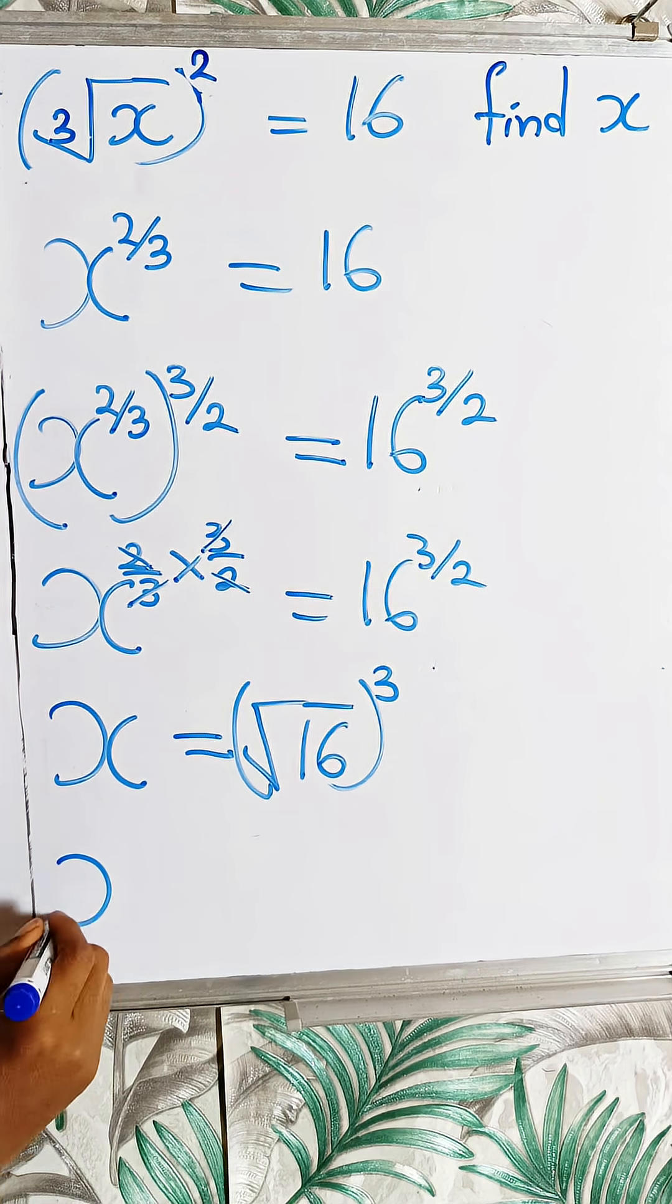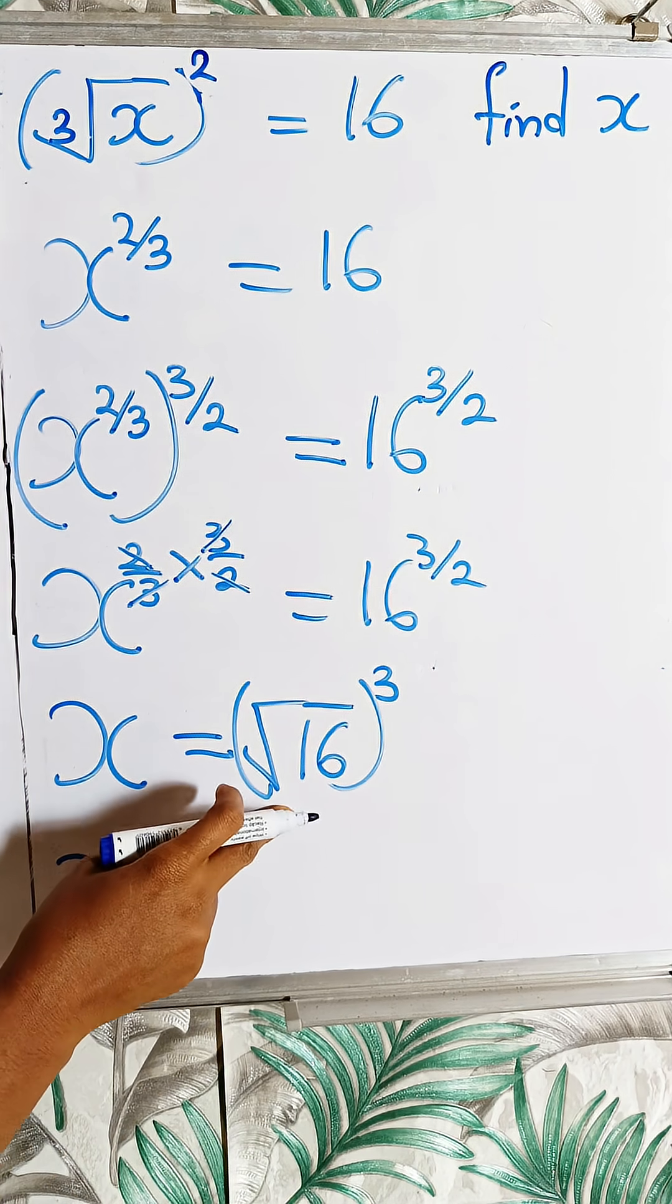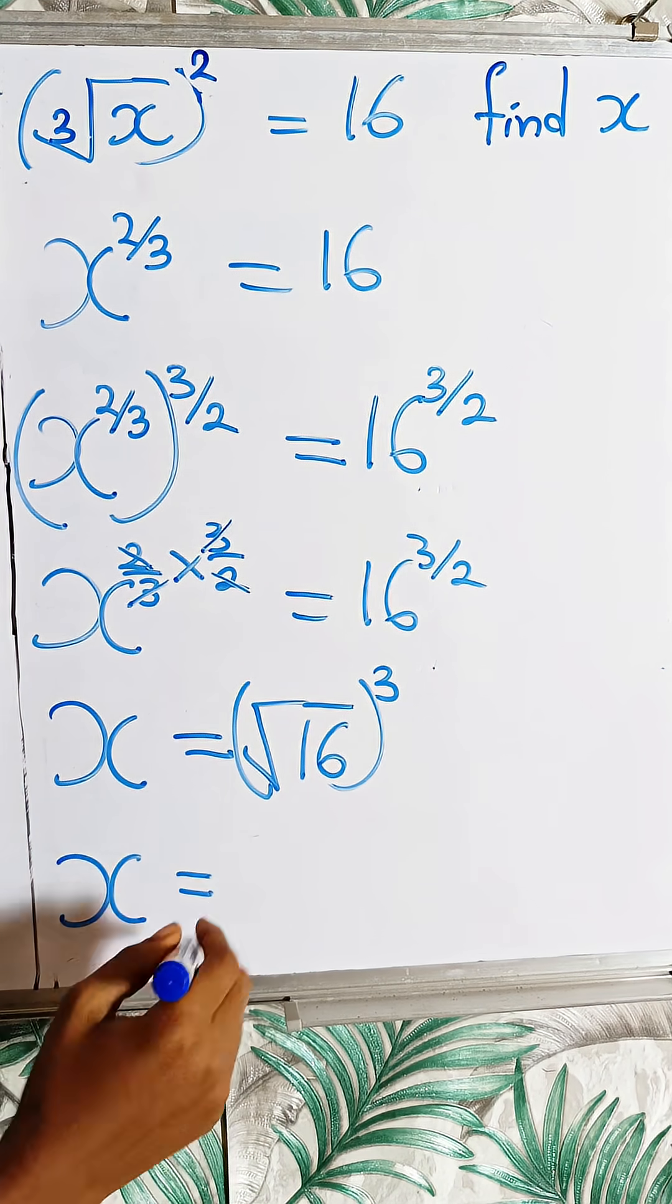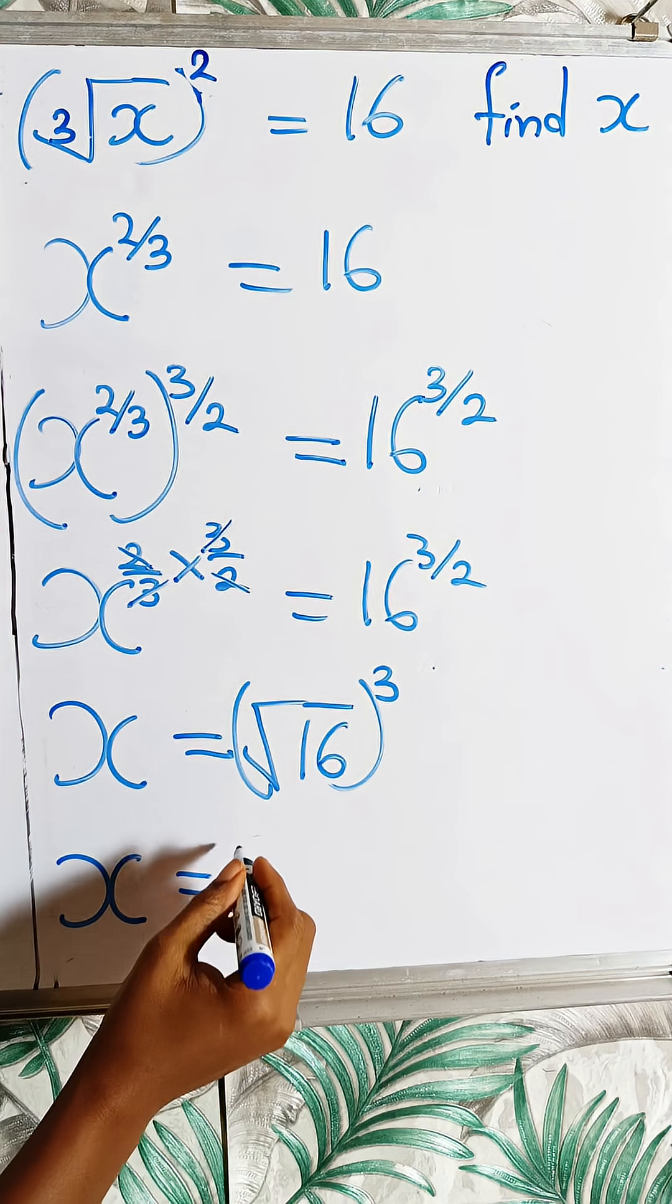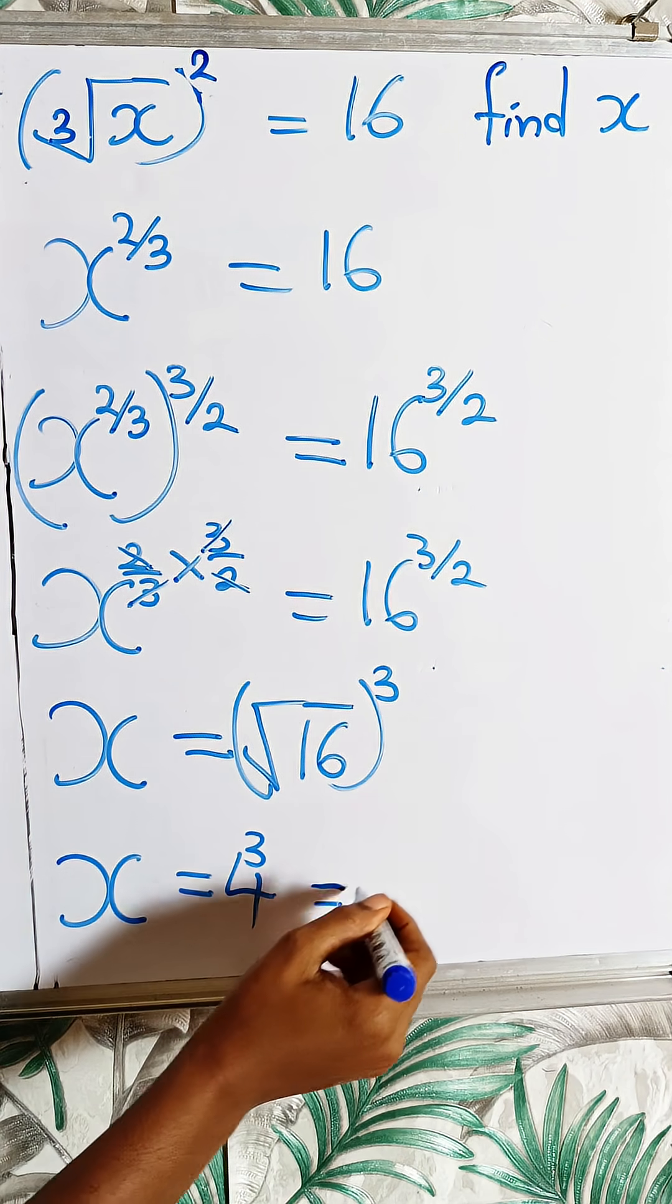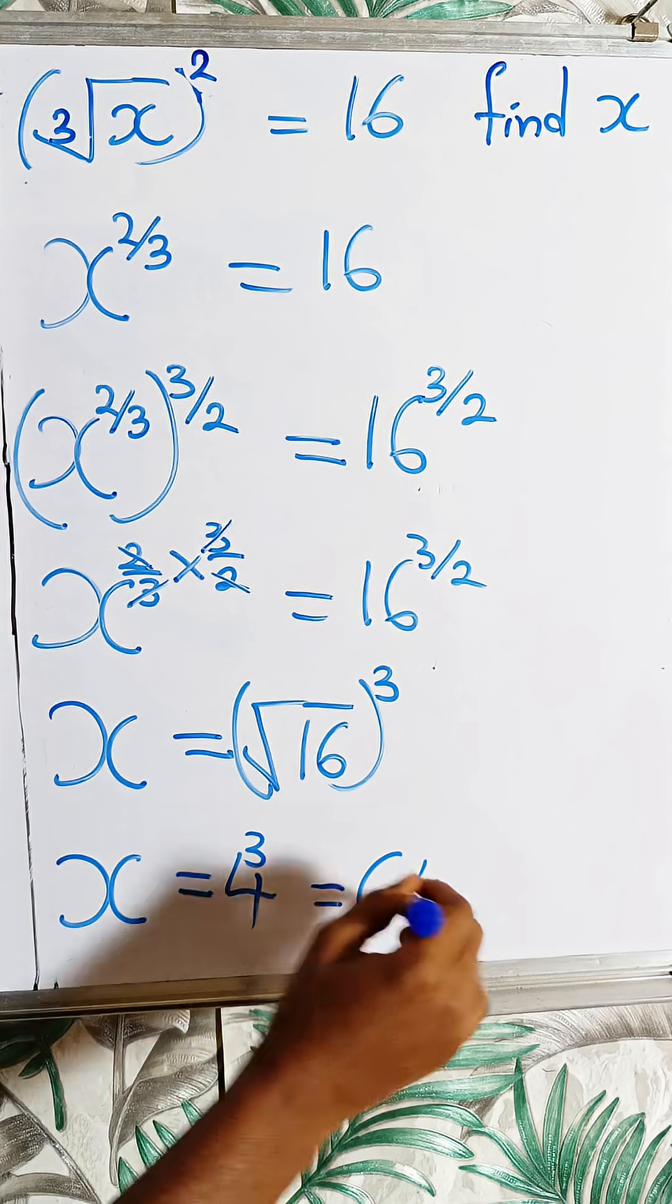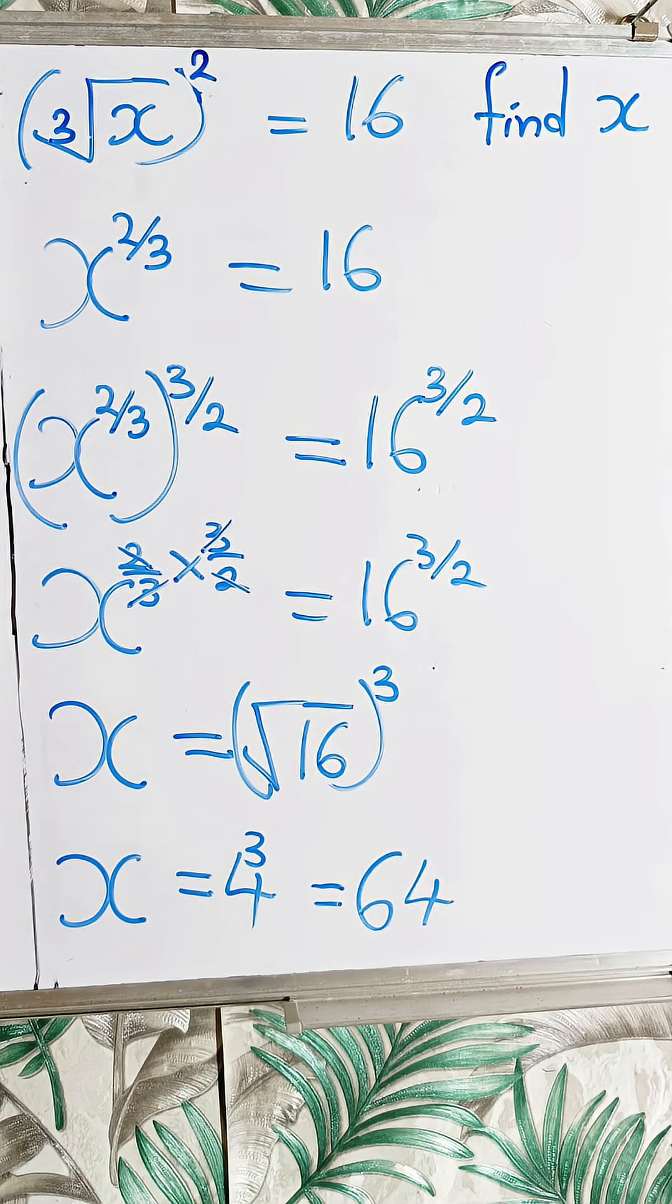So now I have x is now equal to the square root of 16 is 4, and then I'll have to raise it to power 3. And then my answer is 64. So my x is equal to 64.